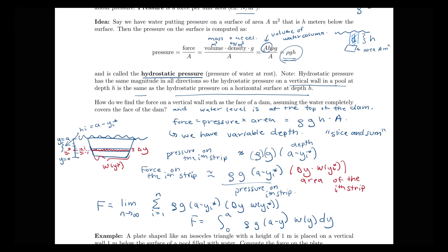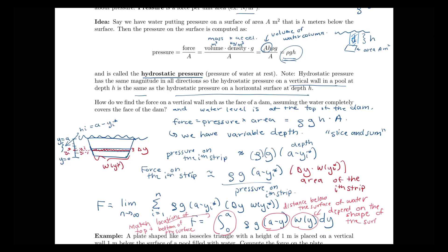A couple of notes about this formula. The bounds from 0 to a always match the locations of the top and bottom of the surface — they have nothing to do with the depth of the water, only the locations of the top and bottom of the vertical surface. The (a − y) term measures your distance below the water surface. And w(y), the width of a strip at height y, depends on the shape of the dam or surface you're working with. In examples, there will be some work involved in computing w(y) depending on the geometry of the problem.